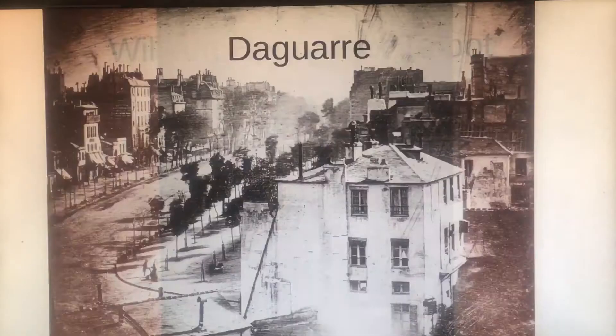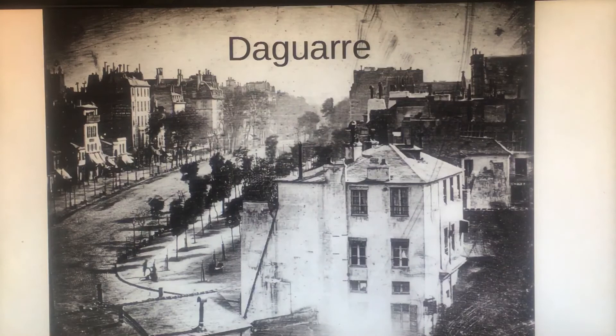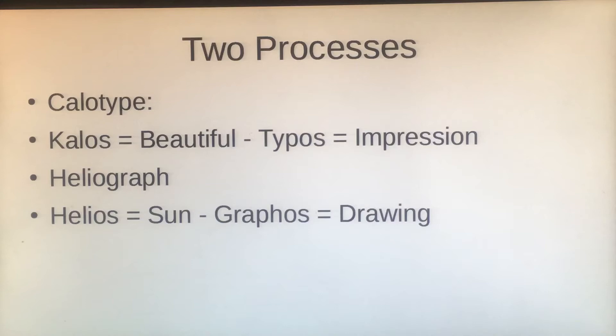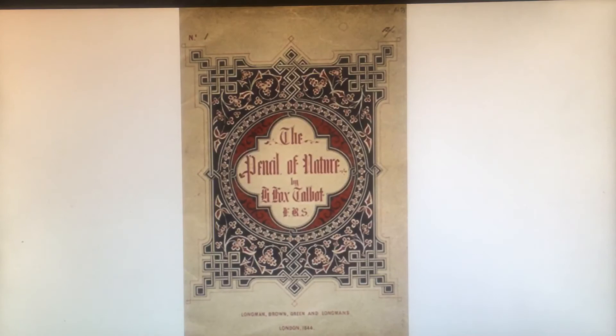There's our friend William Henry Fox Talbot and Daguerre, and there's a photograph taken in the early 1800s. We have the processes: the calotype by Fox Talbot and the heliograph by Niepce — not Daguerre.